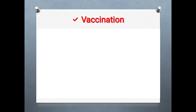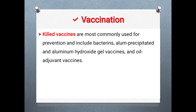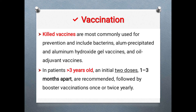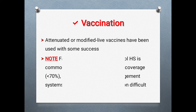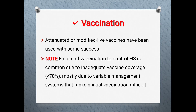For vaccination, killed vaccines are most commonly used for prevention, including bacterin precipitated and aluminum hydroxide gel vaccines and oil adjuvant vaccines. In animals less than three years old, an initial two doses are recommended, one to three months apart, followed by booster vaccination once or twice yearly. Modified live vaccines have been used with some success but may cause sporadic disease and are not usually preferred. Failure of vaccination is common due to inadequate vaccine coverage — less than 70% — mostly due to variable management systems making annual vaccination difficult.